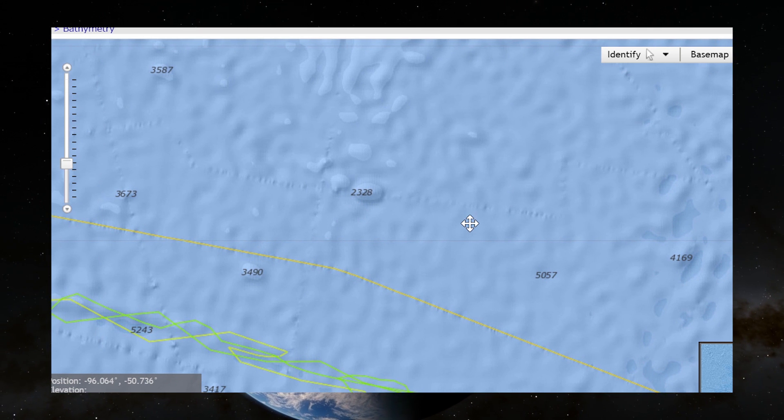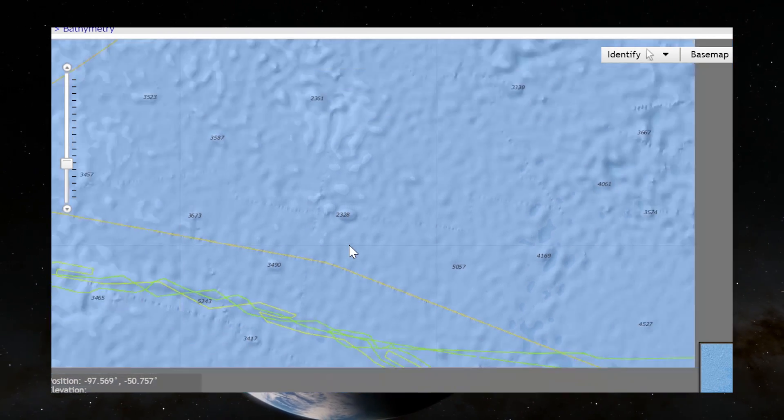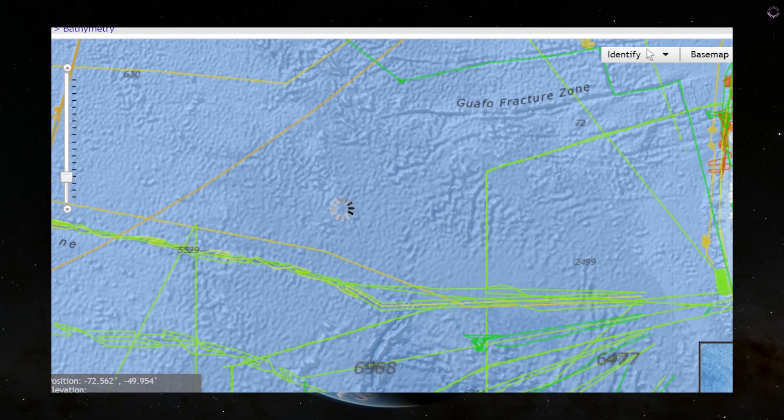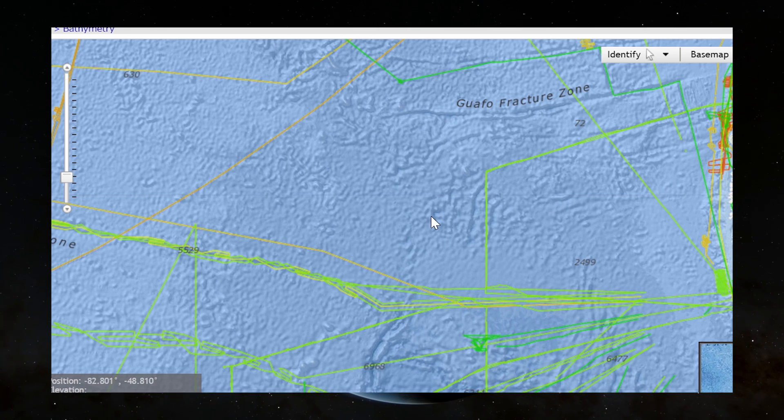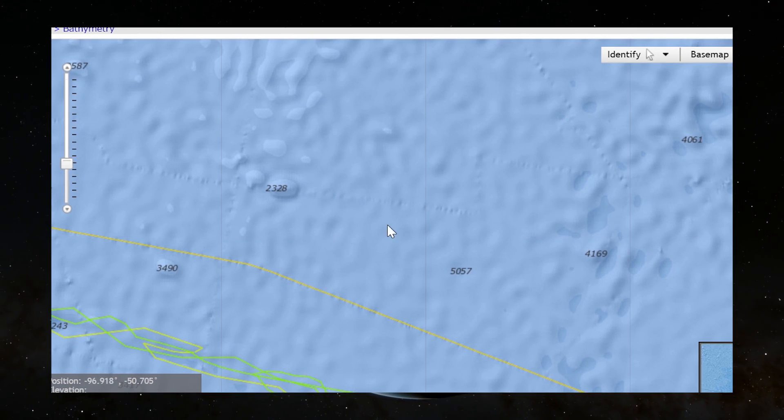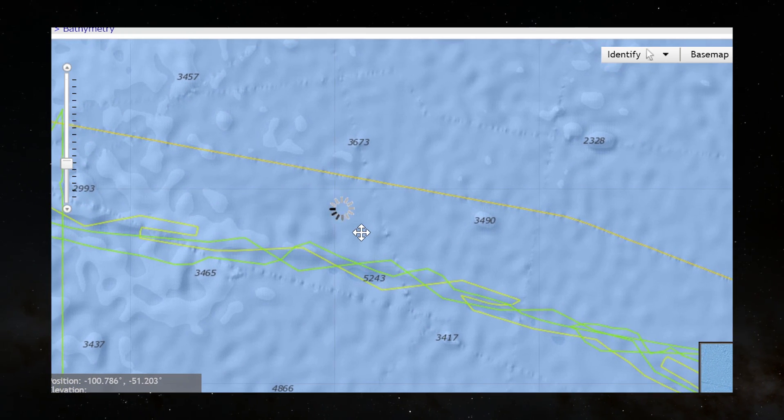The exact location is still unknown but it was somewhere in the vicinity of 50 south, 100 west, very close to the southern tip of west South America. Here I'm going to show you what's in this region. As you'll see there's actually nothing, absolutely nothing. And the depth here is pretty large.